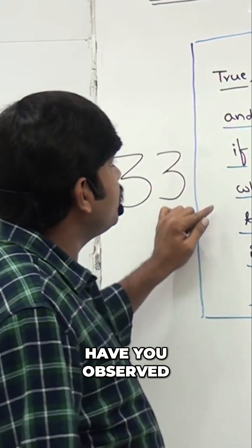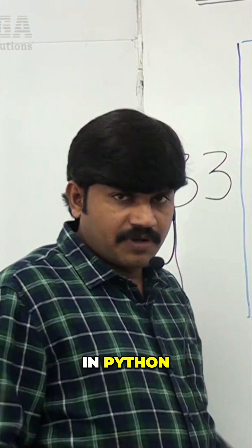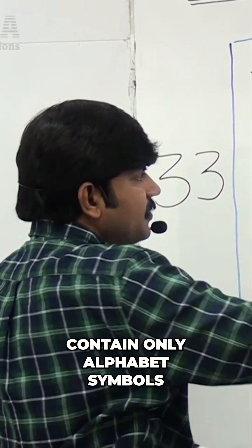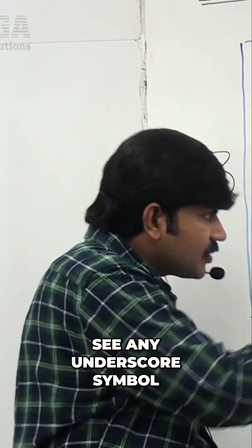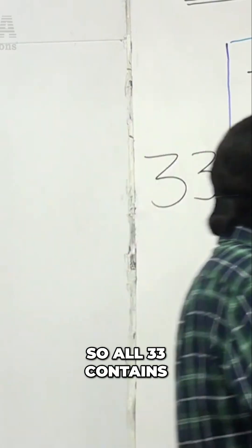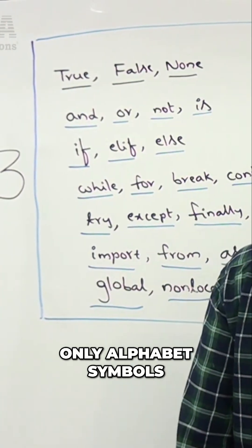First, have you observed? All these 33 keywords in Python contain only alphabet symbols. You're never going to see any underscore symbol. You're never going to see any digits. All 33 keywords contain only alphabet symbols.